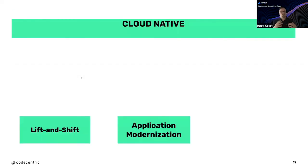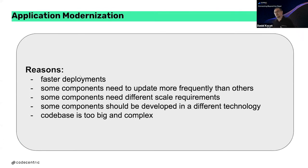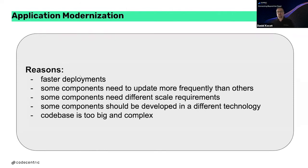When we think about cloud native, we also think about application modernization — modernizing applications that might be old or legacy. Why do we talk about application modernization? We want faster deployments, we have components that need to be updated more frequently, components with different scaling requirements, components that should be developed in different technologies, and code bases that are too big and too complex to handle.